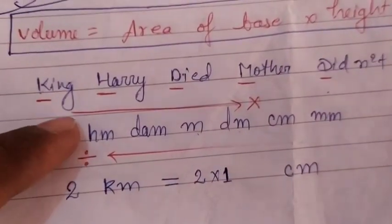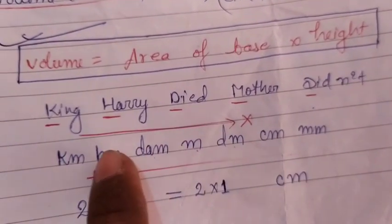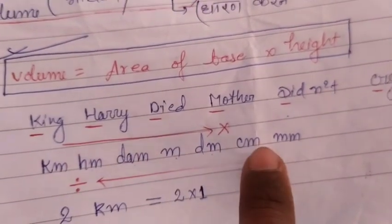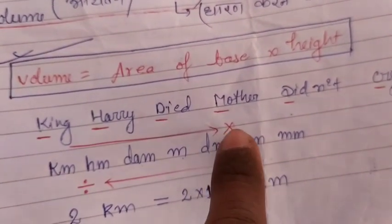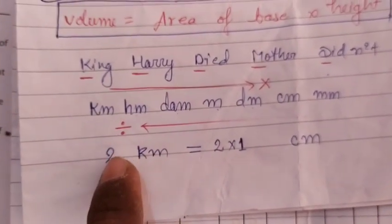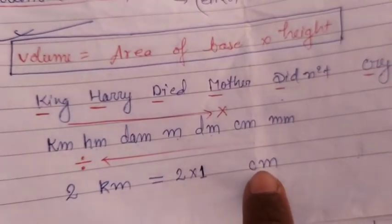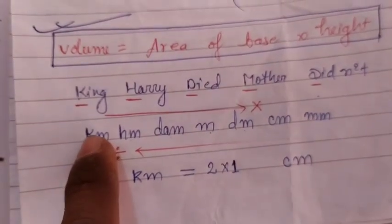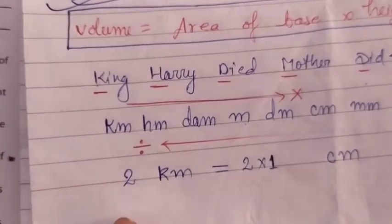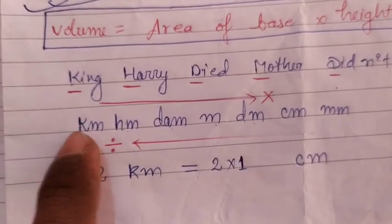When converting units from left to right on this chart, you multiply. For example, to convert 2 kilometers into centimeters: kilometer is on the left and centimeter is further to the right, so we count the steps from kilometer to centimeter.